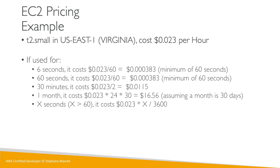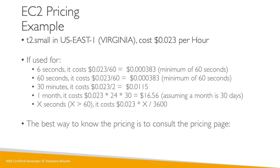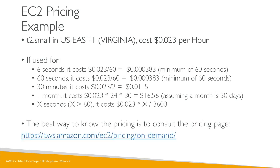Whatever formula you want — for X number of seconds — just use that formula. The best way to know the pricing is to consult the pricing page. Pricing changes all the time on Amazon; they have a tendency to reduce prices over time, so go online to get familiar with EC2 pricing. So far we should have been using the free tier, except for elastic IPs which may have cost a little if unused.